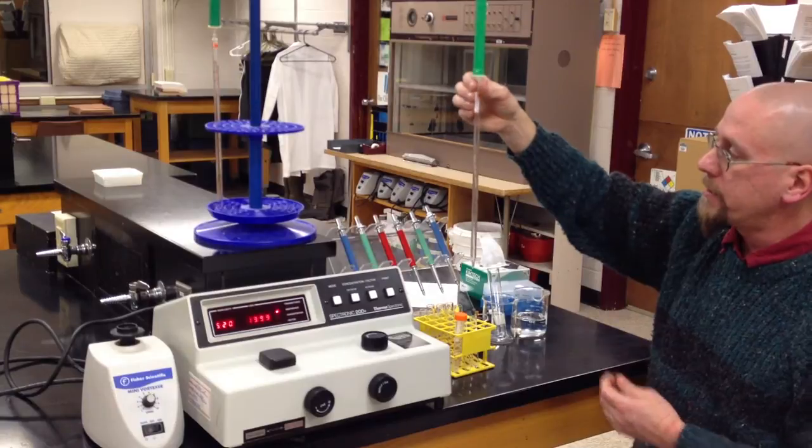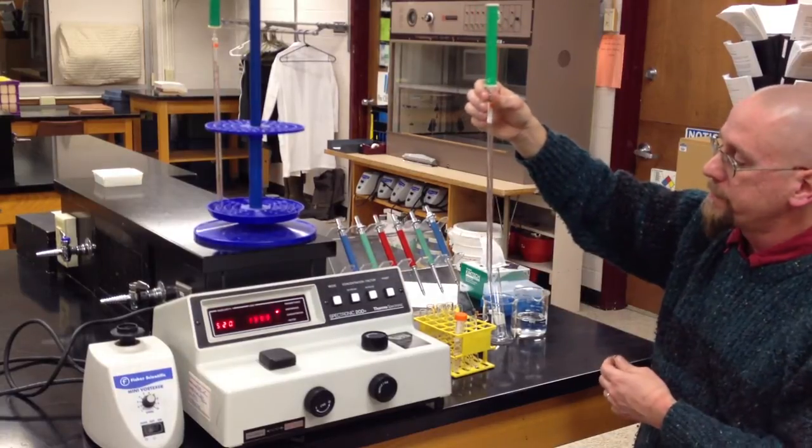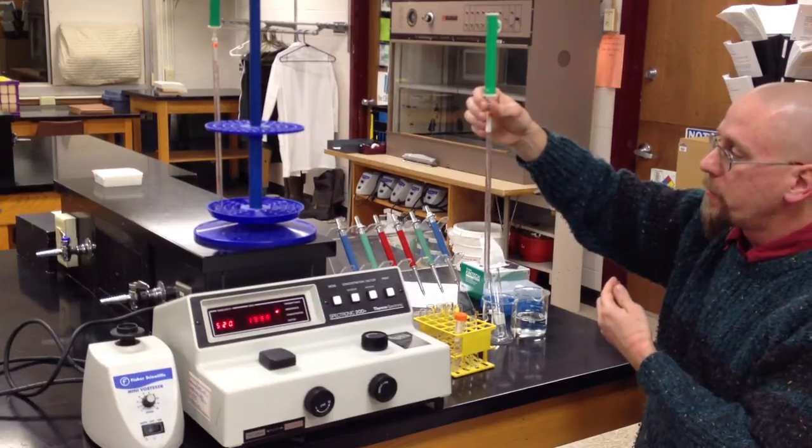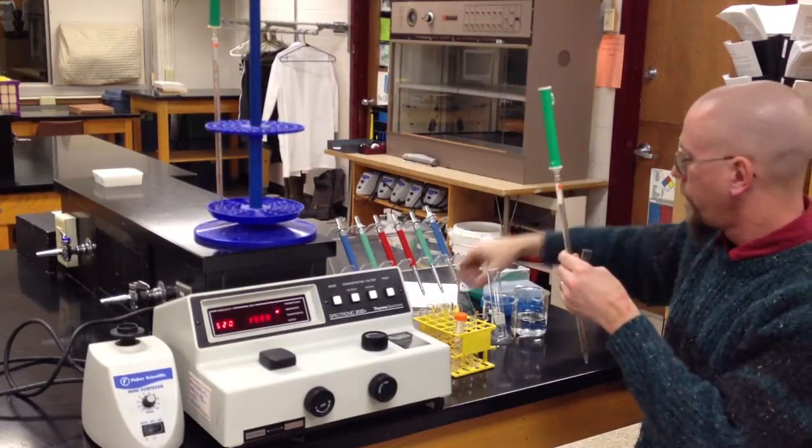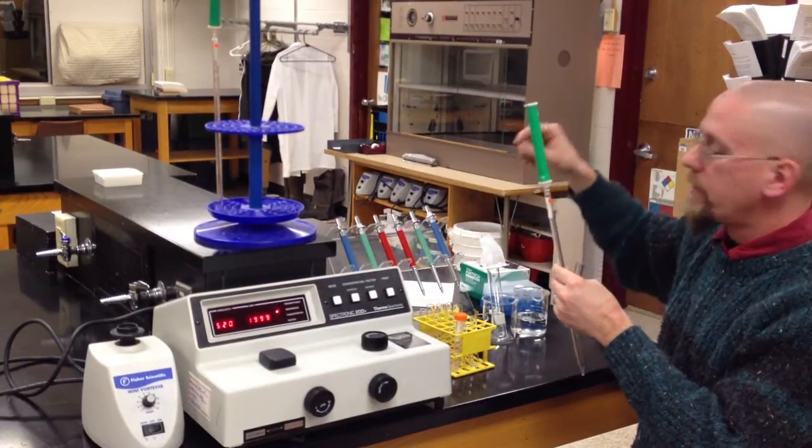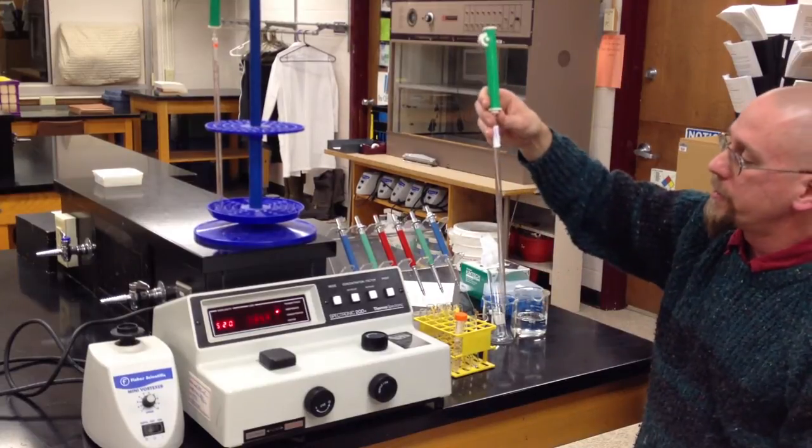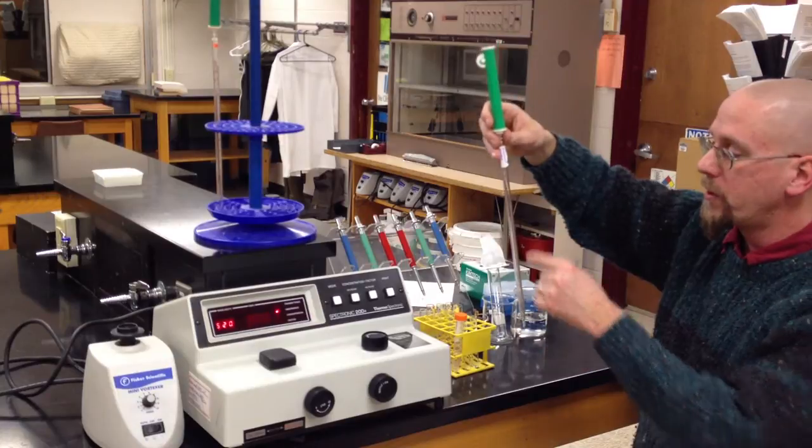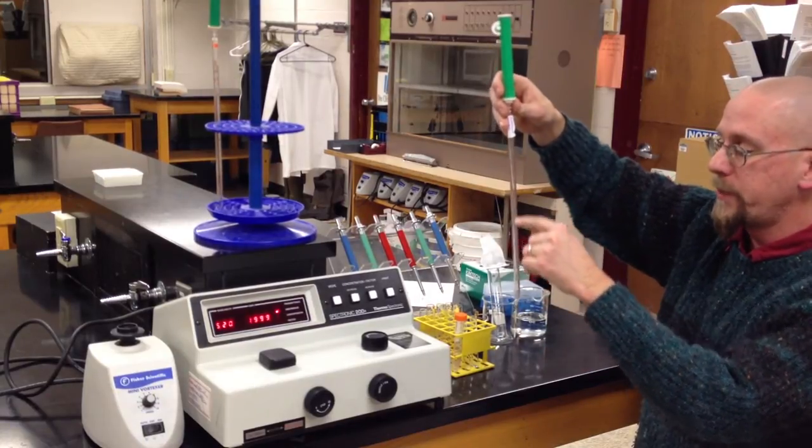You're going to deposit in here 5 milliliters of deionized water. These pipettes are 10 milliliter pipettes. They go from 10 at the bottom to 0 at the top. Whenever you use these pipettes, if you're going to deliver a certain volume, you always fill to the zero and dispense to your value.